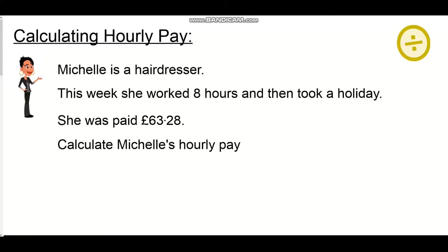This woman only worked 8 hours for the week and then she took a holiday, so we're taking what she earned, £63.28, and we're dividing it by the 8 hours that she worked. All we have to do here is set up a division sum: £63.28 divided by 8.